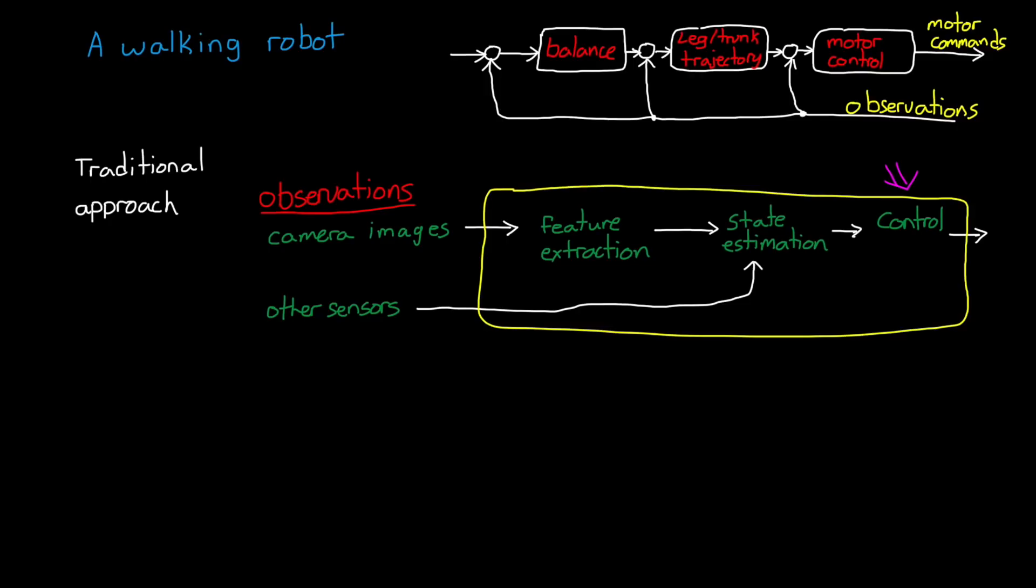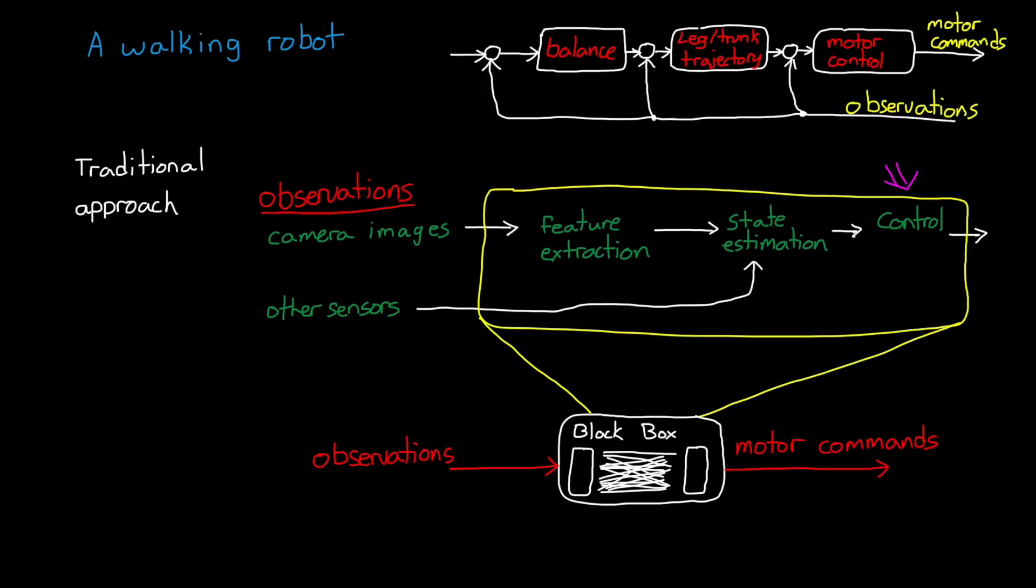Instead of all this complexity, let's squeeze it down into a single black box that simply takes in observations and outputs the low level motor commands directly. If we were infinitely smart, we could sit down and design a function that could get a robot to walk without concerning ourselves with all of the internal steps along the way. But since we're not, that's where machine learning comes in.